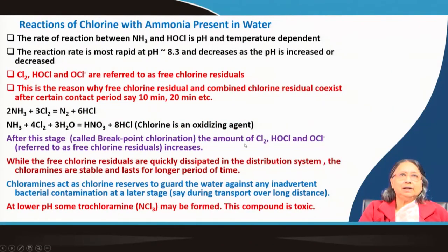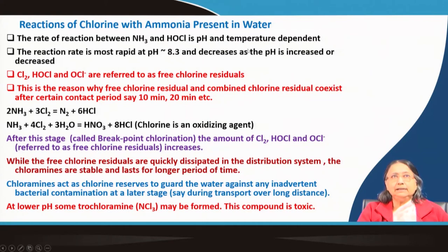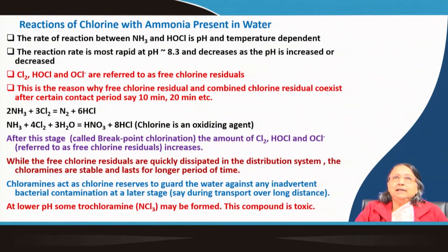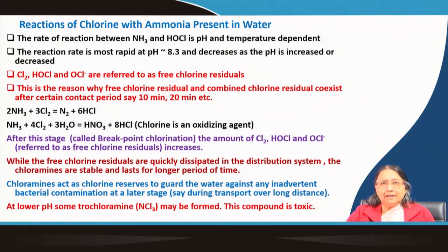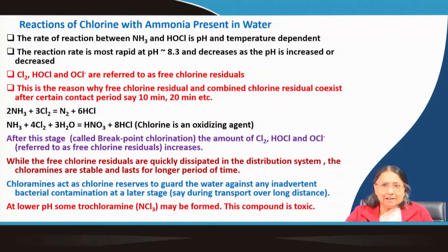The rate of reaction between ammonia and HOCl is pH and temperature dependent. The reaction rate is most rapid at pH 8.3 and decreases as the pH is increased or decreased. Cl₂, HOCl, and OCl⁻ are called free chlorine residuals. Free chlorine residual and combined chlorine residual coexist after a certain contact period — say 10 or 20 minutes. If ammonia is present, some chloramines form and some free chlorine remains — it is basically a mixture.